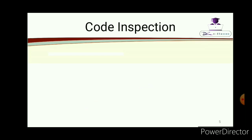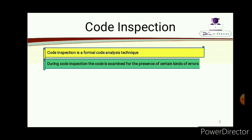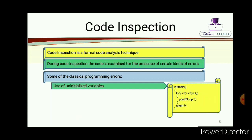Code inspection is a formal code analysis technique. During code inspection, the code is examined for the presence of certain kinds of errors known as classical errors. Some classical programming errors include use of uninitialized variables — for example, if you have used a variable i that has not been declared, that is one kind of uninitialized variable error.